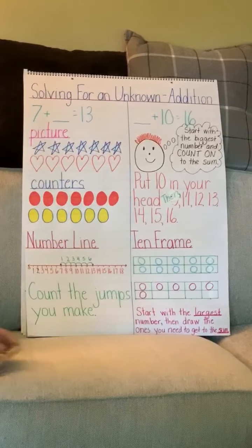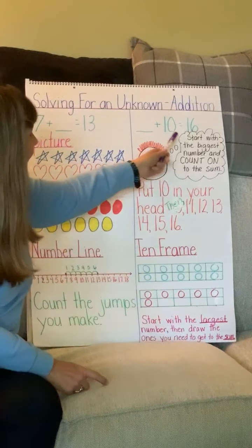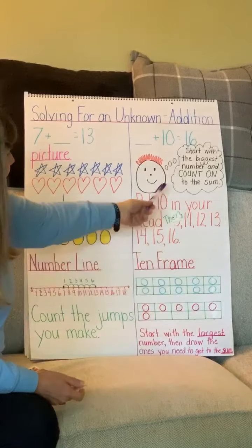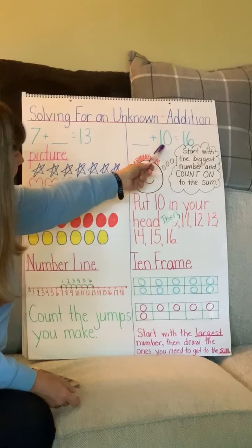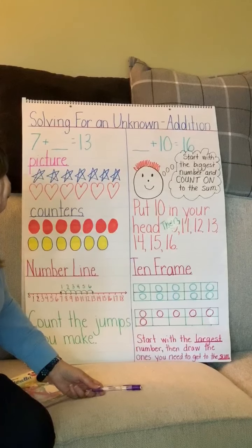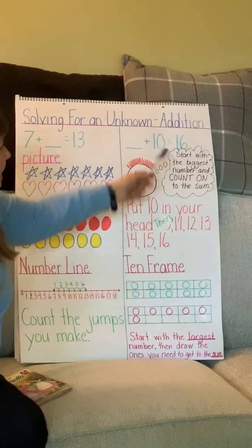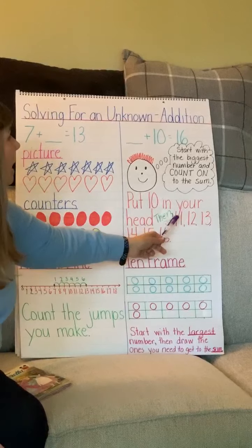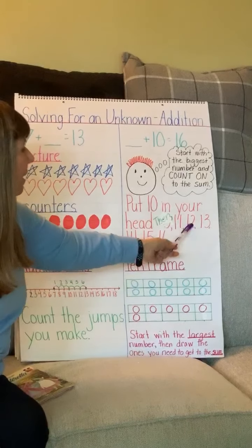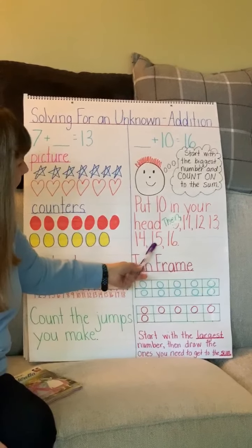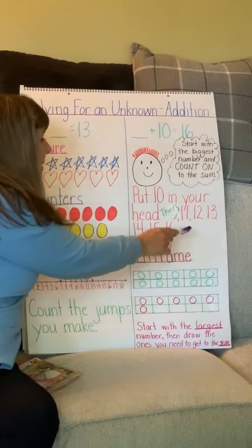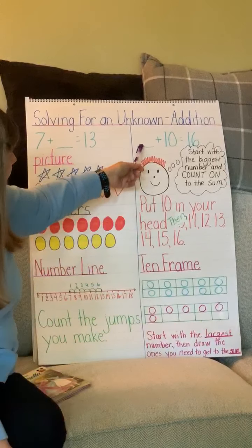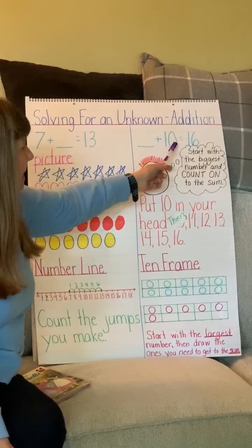For the other problem, blank plus 10 equals 16. We start with the biggest number we have, which is 10 — put 10 in your heads. Then count until we get to our sum: 11, 12, 13, 14, 15, 16. Let's count how many numbers that is: 1, 2, 3, 4, 5, 6. So our answer is 6 — 6 plus 10 equals 16.